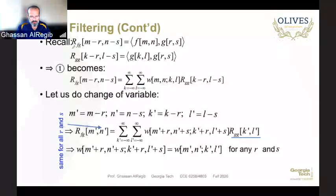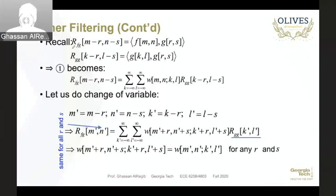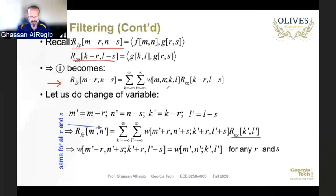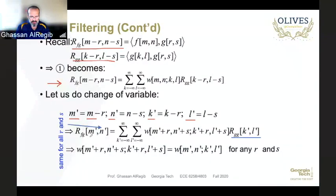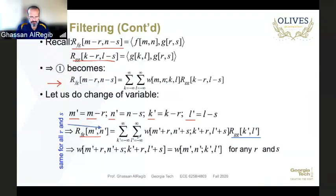Given this equation with indices m, r, m−r, m−s, and k and n for the transformation, we introduce a change of variables: m′ = m−r, n′ = n−s, k′ = k−r, n′ = n−s. Substituting m′ and n′, on the left-hand side we have R_fg as a function of m′ and n′. On the right-hand side, the summation terms are a function of k′ and n′ with the autocorrelation function.